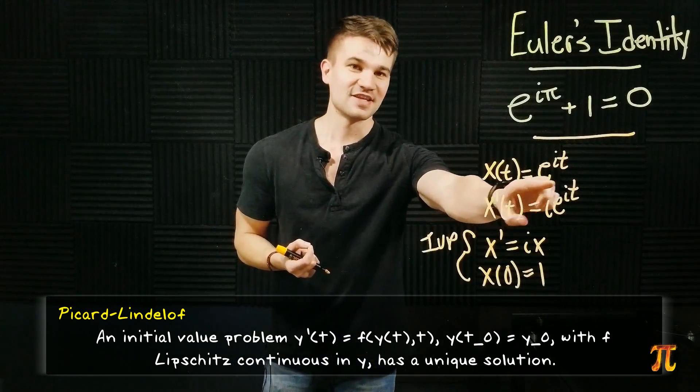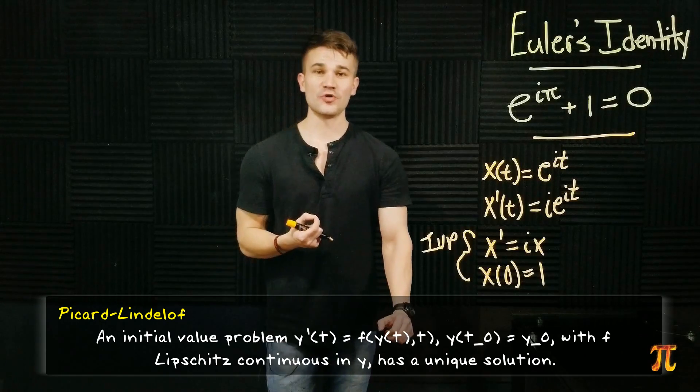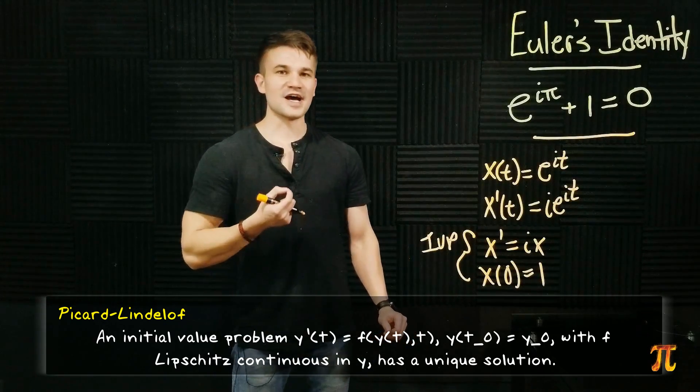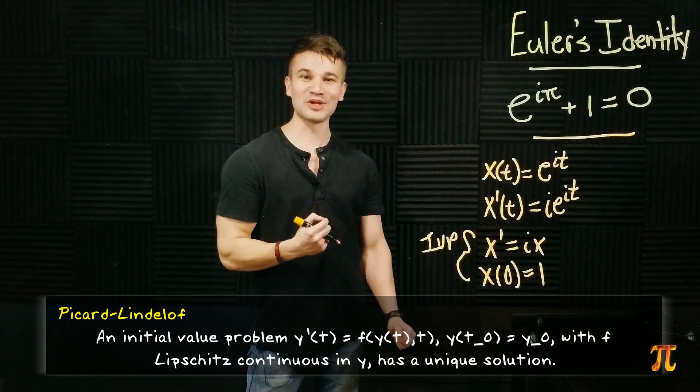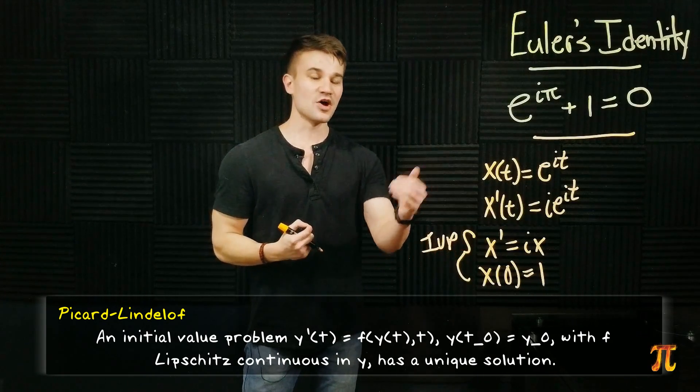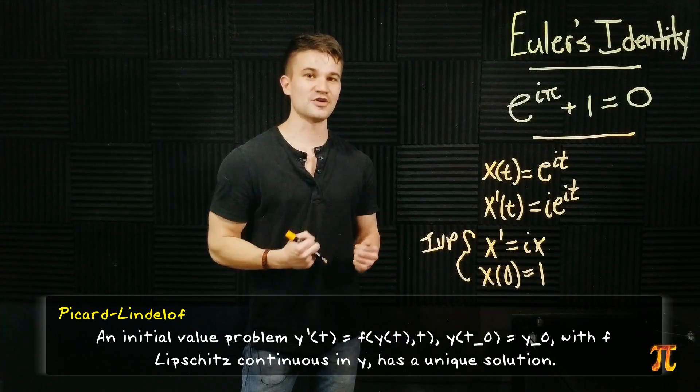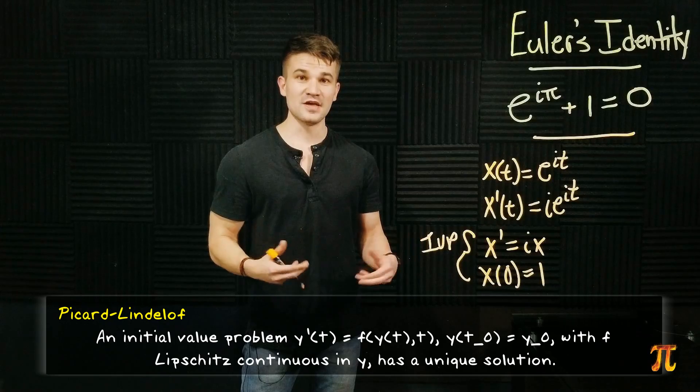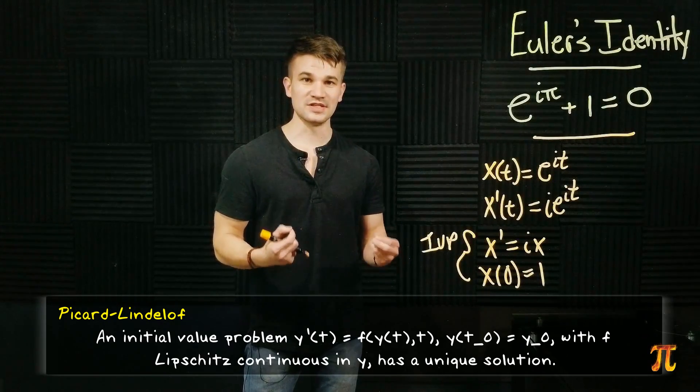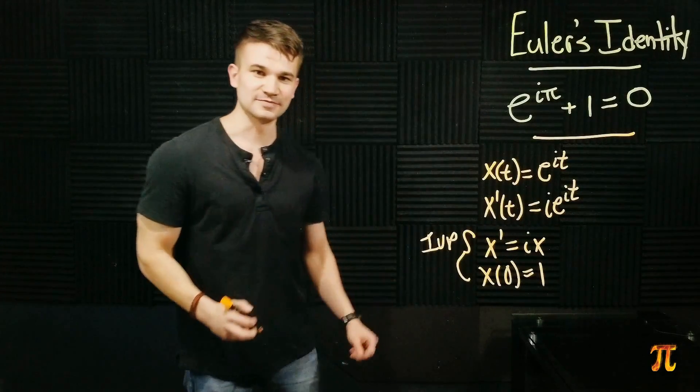So given that e to the i t is a solution, if we can show that i sine t plus cosine t is also a solution to this initial value problem, then they must be the same because the solution is unique. So let's look at it.